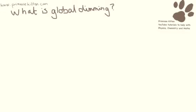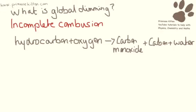Here is a super quick video explaining what global dimming is. When we burn a hydrocarbon and the combustion is incomplete, we are going to get carbon monoxide, carbon and water as some of the products that come out. And it is the carbon that leads towards global dimming.